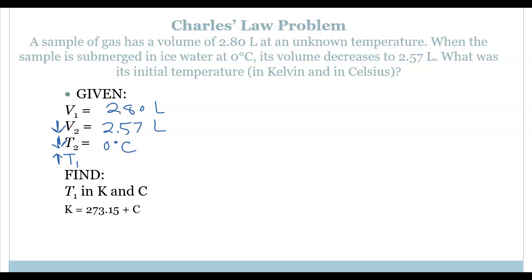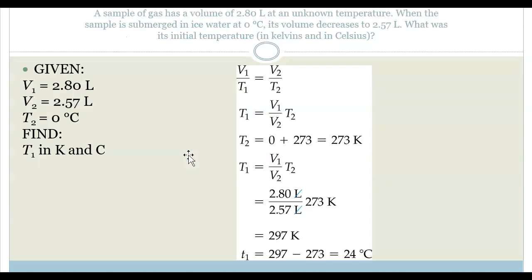We need to convert from Celsius to Kelvin, so we add 273.15 to get the temperature in Kelvin. We can rearrange our equation, V1 over T1 equals V2 over T2, and solve for T1. Plug in our numbers and we should find that T1 is equal to 297 degrees Kelvin, which is an increase from temperature two, which is 273 Kelvin. If you convert that to Celsius, you would have 24 degrees Celsius.